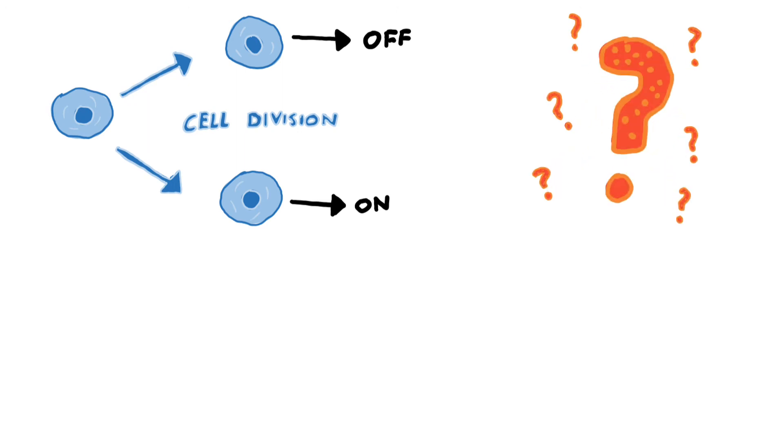Position effect variegation results in expressed or silent states being epigenetically inherited through cell division. We know CERB proteins and DOT1 function in this, but it doesn't answer how these two epigenetic states can be stably maintained in identical cells. However, positive feedback loops were recognized to stabilize these on and off states.